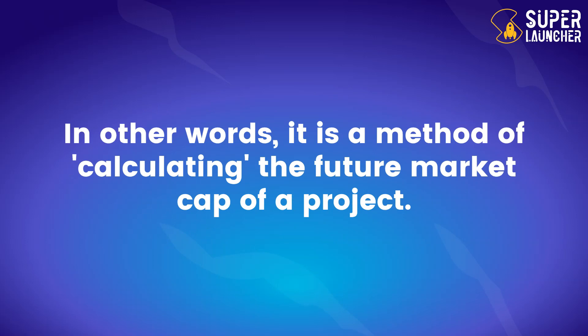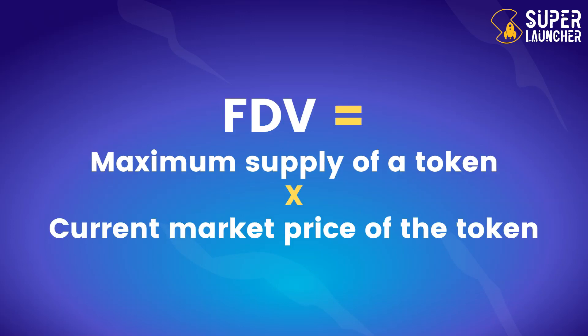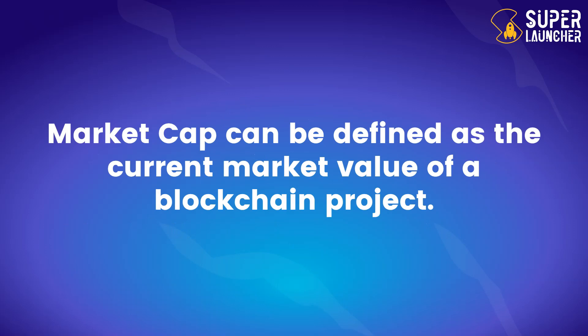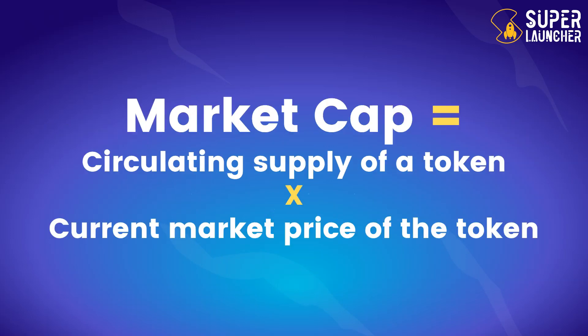In other words, FDV is a method of calculating the future market cap of a project. The formula to calculate FDV is: FDV equals the maximum supply of a token times the current market price of the token. How is FDV different from market cap? Market cap equals the circulating supply of a token times the current market price.